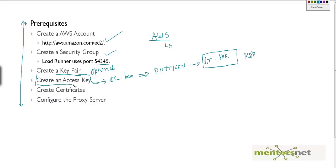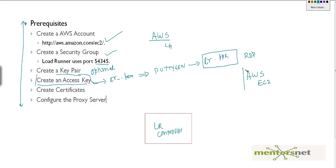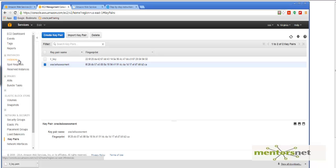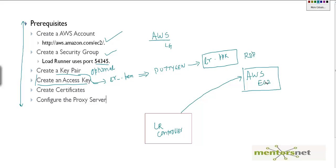The next thing is to create an access key. The way it works: this is your LoadRunner Controller, and it is going to send commands to the Amazon Web Services EC2 service. LoadRunner Controller is not going to log in manually and create a new instance the way you would. Instead, AWS has exposed different kinds of services, and LoadRunner Controller will use command-line commands to spawn a new instance for you.